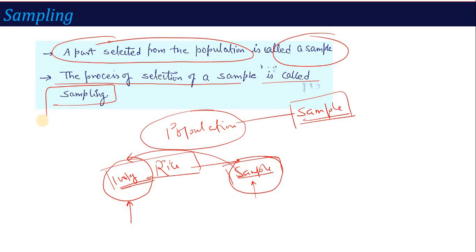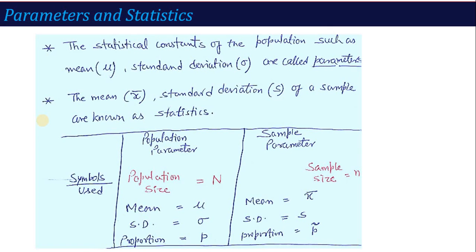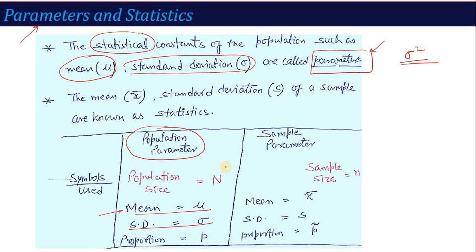Now an important term - there are two characteristics: population and sample. The population parameters or population characteristics, like population mean, population standard deviation, they are called parameters in short. If you use the word parameter, that denotes the characteristics of population. The statistical constants of population such as mean denoted by μ (mu), standard deviation denoted by σ (sigma), variance denoted by σ². These are called the population parameters. And capital N stands for population size.